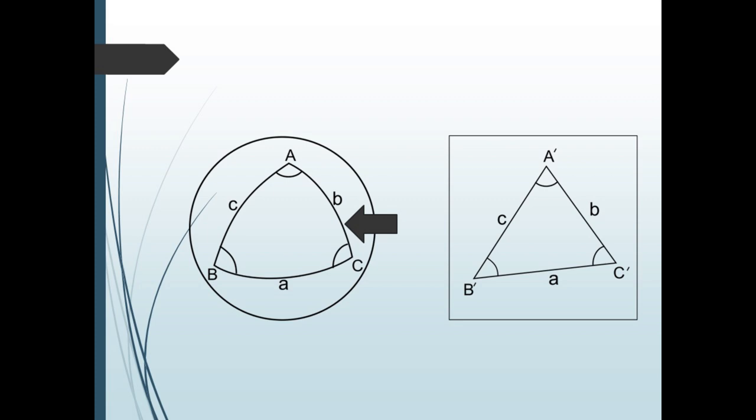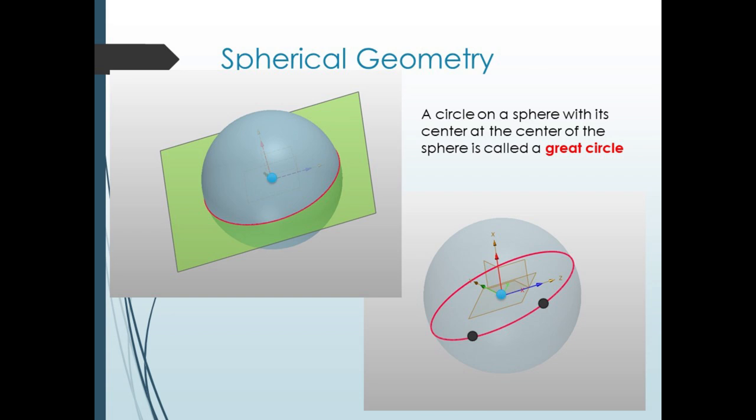Now we wish to change the base upon which we construct our geometry from a plane to a sphere. The entity that replaces our line is that of a great circle. This can be defined as the intersection of a plane with a sphere, where the plane contains the center of the sphere, or equivalently, a circle on a sphere whose center is the center of the sphere. Note that if we have two points on a sphere, there is just one great circle going through both, and the shortest path between the two points will be an arc of a great circle.